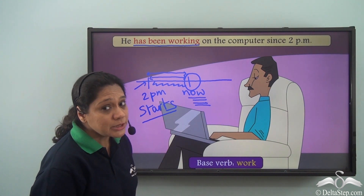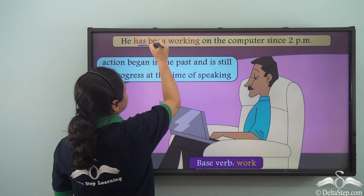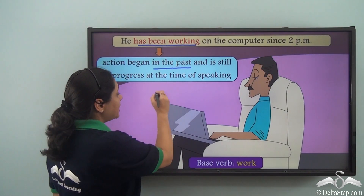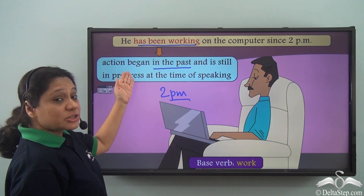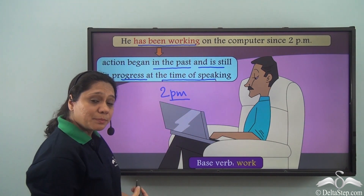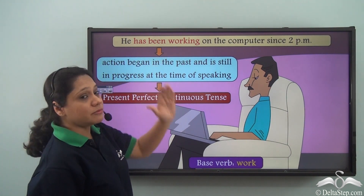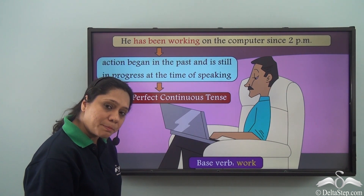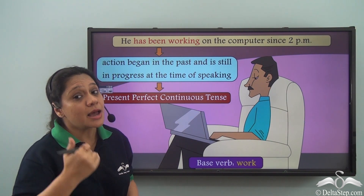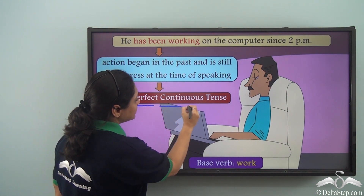From 2 p.m. till now he has been constantly working on the computer, and he is still working now. So 'has been working' tells us that he started some time in the past, continued working for that entire duration of time till now, and he is continuing to work now. So 'has been working' shows us that an action began in the past — at 2 p.m. — and is still in progress at the time of speaking.